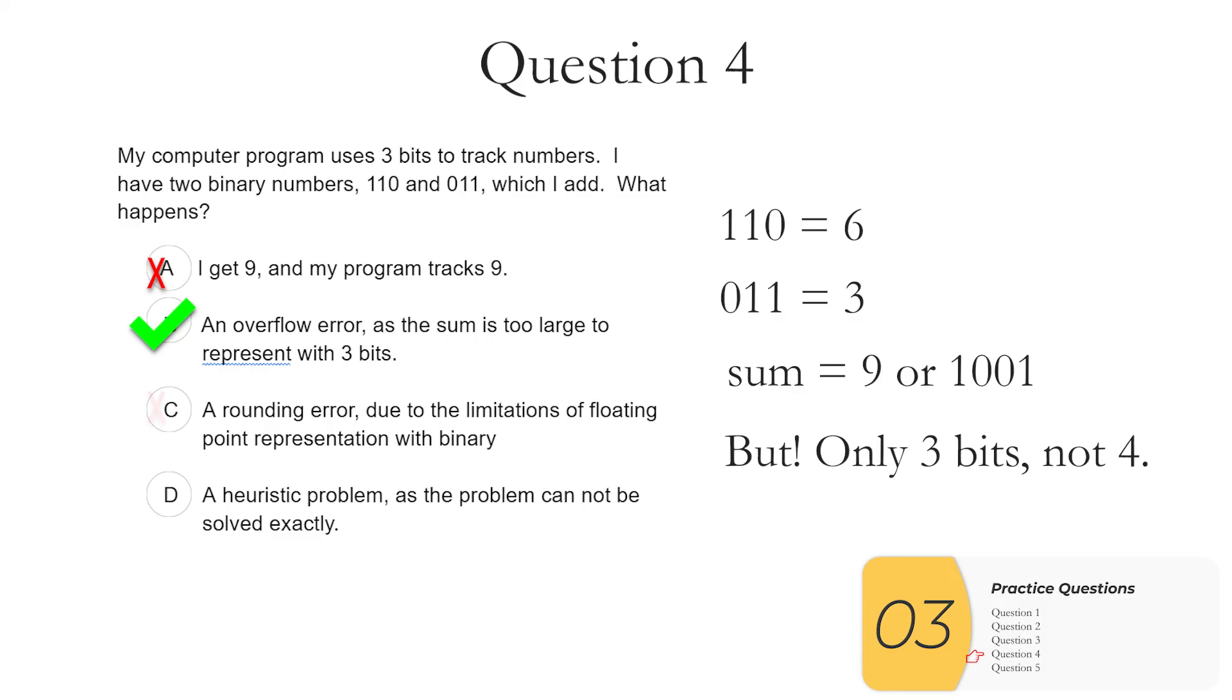C, a rounding error. C, as it's written, pretty much defines a rounding error. But I don't have any decimals, so floating point representations are not really relevant here. And D, heuristics. I do use heuristics when I can't solve a problem exactly, but this is an exactly solvable problem, and heuristics are not relevant here. So the answer is B.